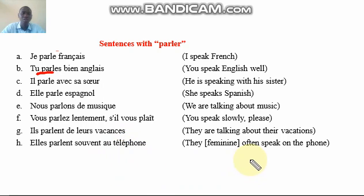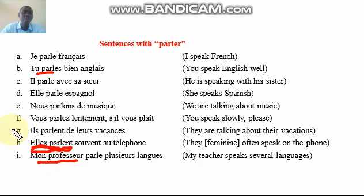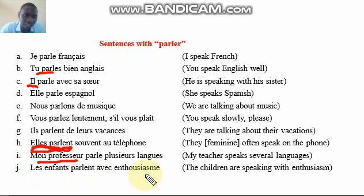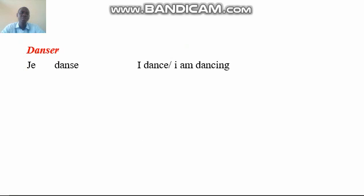'Elle parle souvent au téléphone' — she often speaks on the telephone. Take note: 'elles' is used for two women or a group of women speaking. If it was a male and a female, you would use 'ils.' Also, 'mon professeur parle plusieurs langues' — my teacher speaks several languages. 'Les enfants parlent avec enthousiasme' — the children speak with enthusiasm. For 'les enfants,' even if we don't know masculine or feminine, as a plural collection you use 'parlent.'